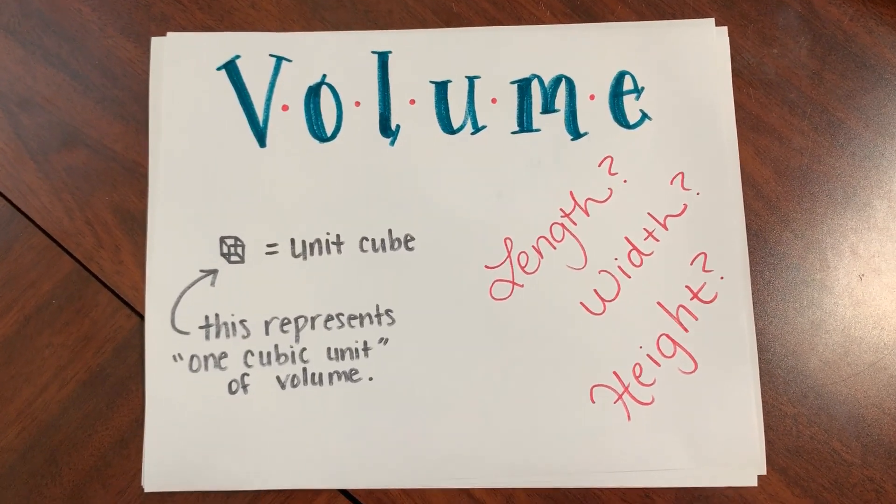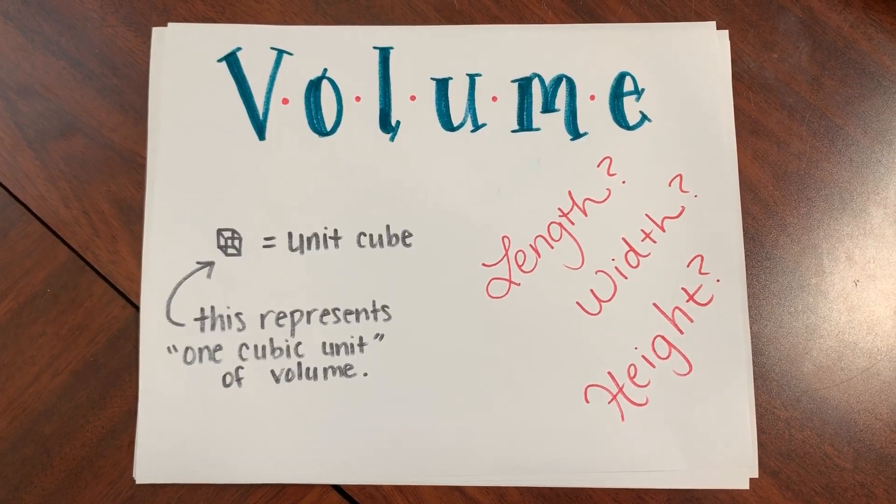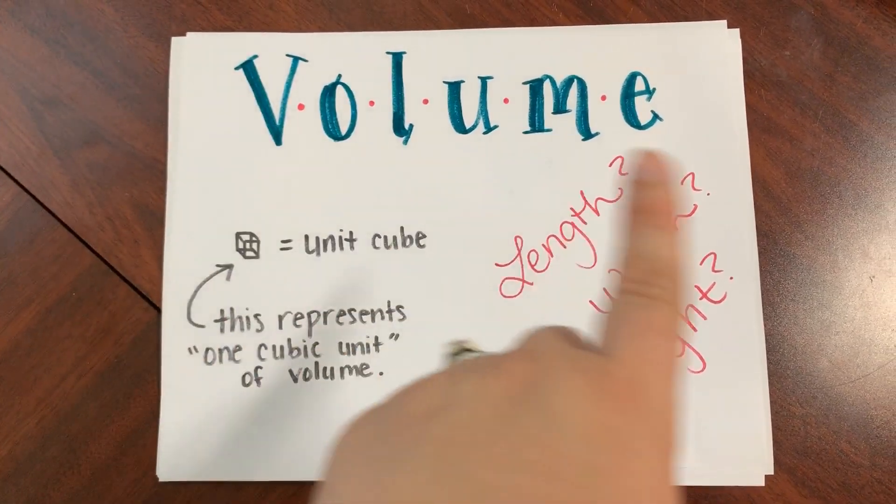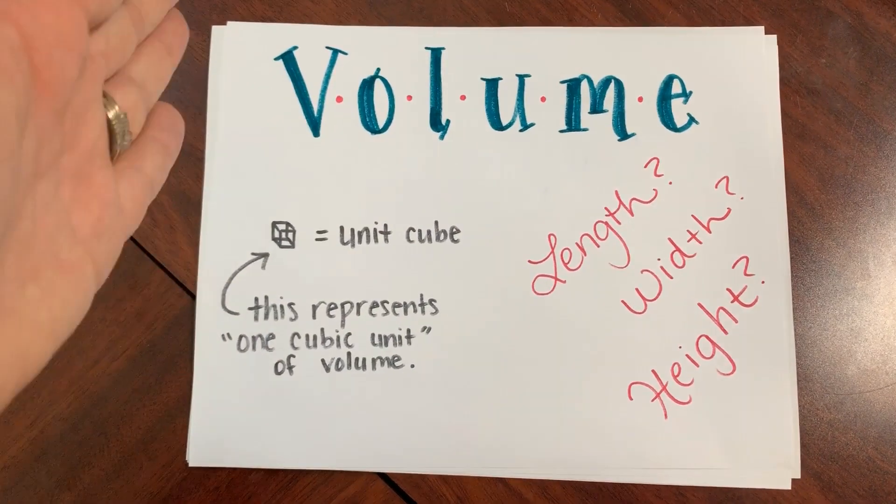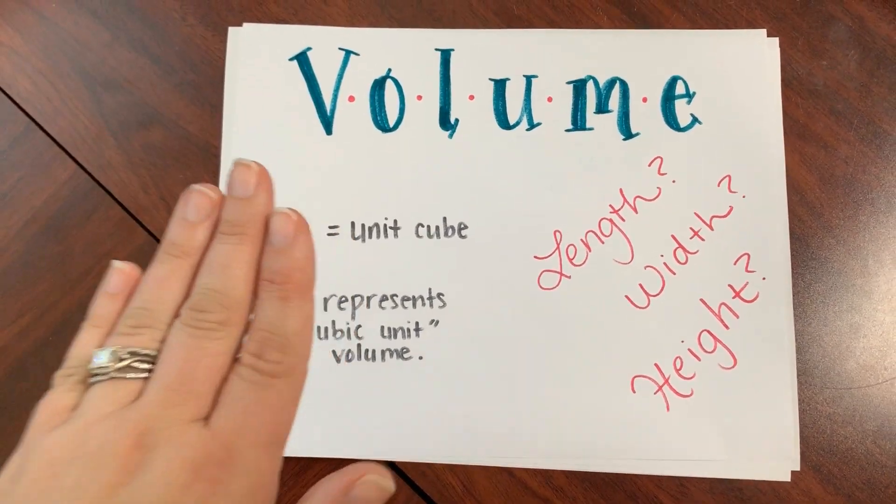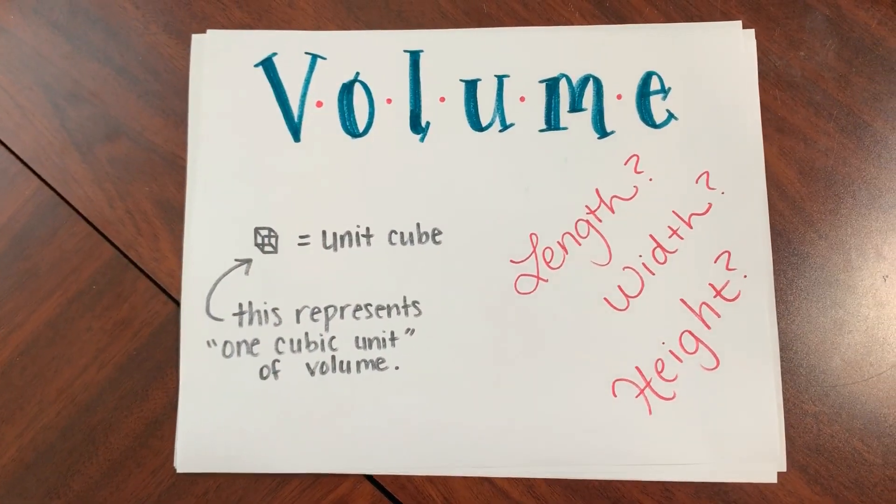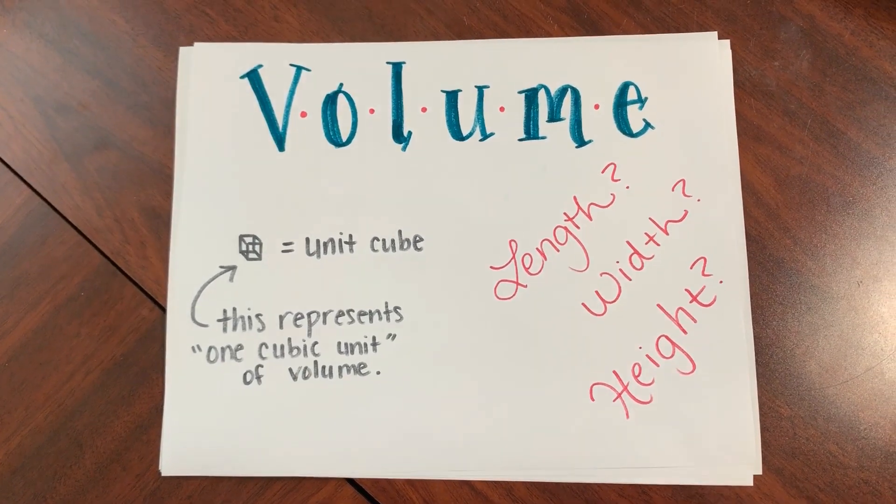Length, width, and height are some pretty important words for this unit, so we want to make sure that we understand what those mean. Length is how long something is, width is how wide something is, and height is how tall something is. Those words are going to really come in handy as we progress through our unit.